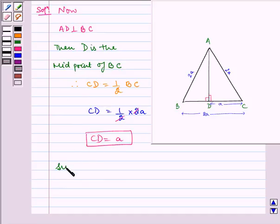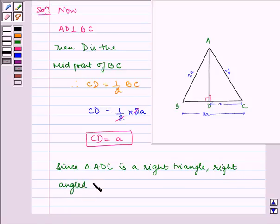Since triangle ADC is a right triangle, right angled at D.